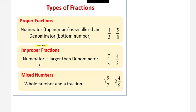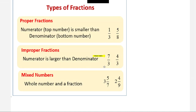Improper fractions: in this case the numerator is larger than the denominator. Examples: 7 over 3, 4 over 3. As you can see, 7 is greater than 3 and 4 is greater than 3 — that's why they are improper fractions.